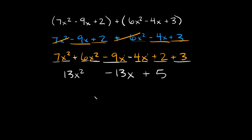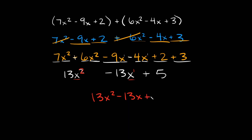Is there anything else we can combine together? No. You might be wondering: why can't we combine the x squared and the x? Well, in order to combine terms, they have to have the same variable — which they do, they both have an x — but they also have to have the same exponent, which in this case they don't. There's a 2 on the x squared and a 1 on the x. Since they have different exponents, you can't combine those. So your simplified answer is 13x squared minus 13x plus 5.